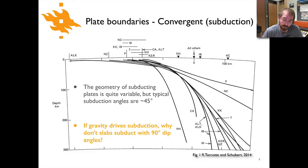Question for you, and again I'll give you a chance to think about it for a moment by pausing the video, is if gravity is driving the subduction process, why are slabs subducting at about 45 degrees and not closer to 90 degrees? Why aren't these slabs sinking straight down toward the center of the Earth? So again, pause the video, think about that for a moment, and we'll come back to that question.